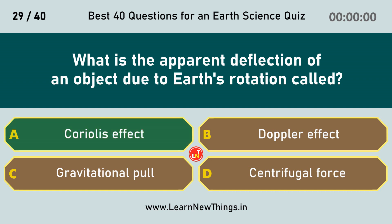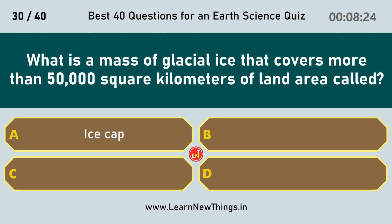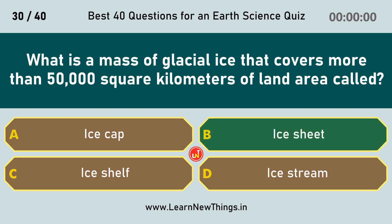Coriolis Effect. What is a mass of glacial ice that covers more than 50,000 square kilometers of land area called? Ice Sheet.